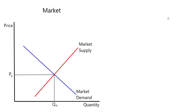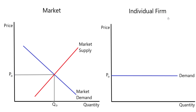The equilibrium price is determined by the interaction between market demand and market supply. So the market determines the price, and each individual firm is a price taker. What that means effectively is that the demand curve facing each firm is going to be perfectly elastic at that market price. Whether the firm produces one unit of output or 100,000 units of output, the amount they're going to receive per unit is just the price of the good.